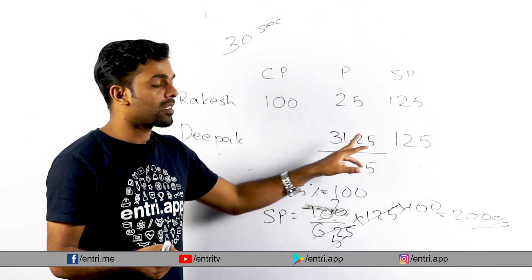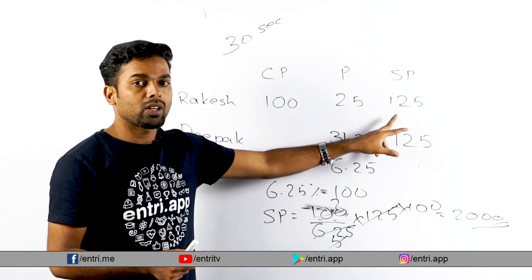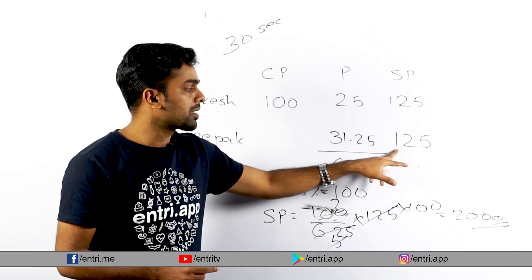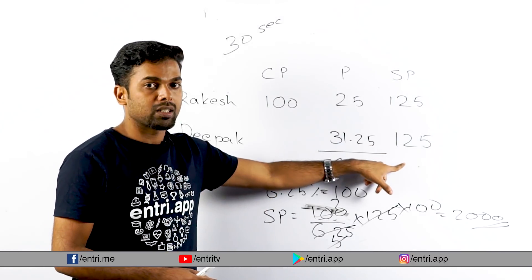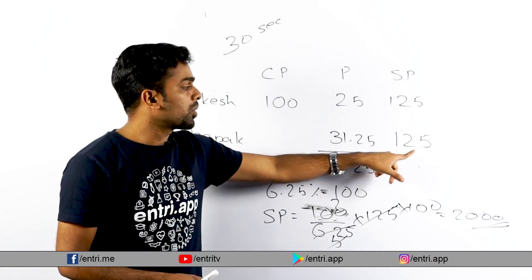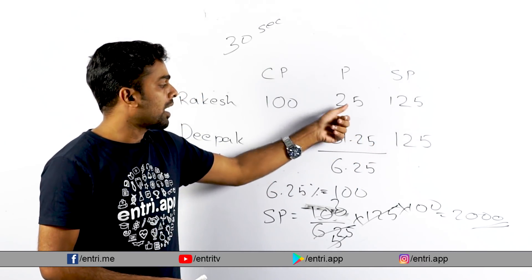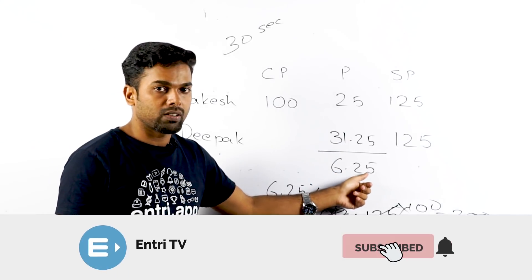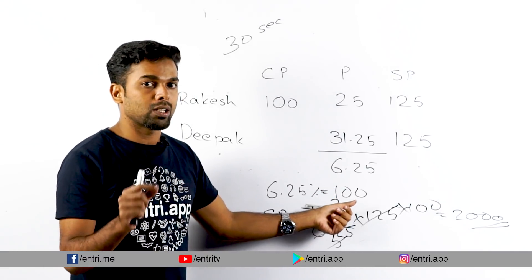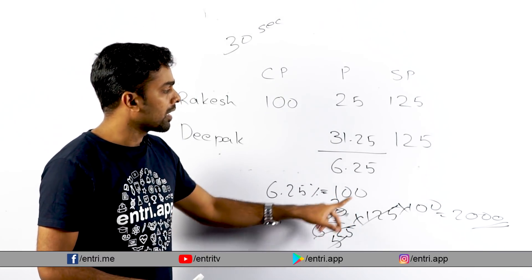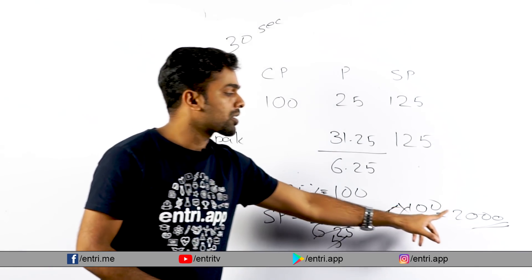The selling price of Deebak is also 125. The profit percentage on selling price gives 31.25. The difference is 6.25. That 6.25 corresponds to Rs.100 in real value. So the selling price = (100 / 6.25) × 125 = Rs.2000.